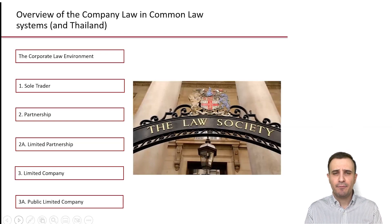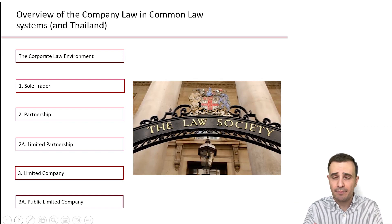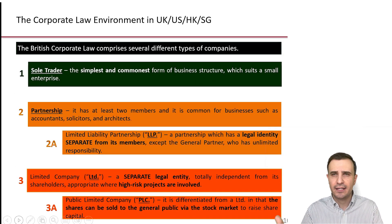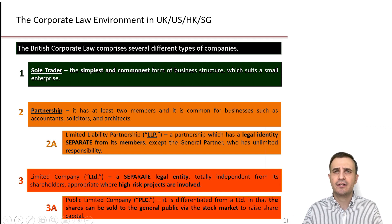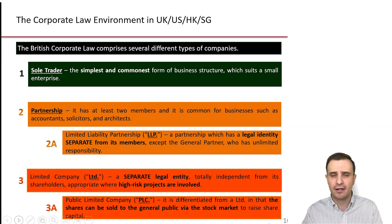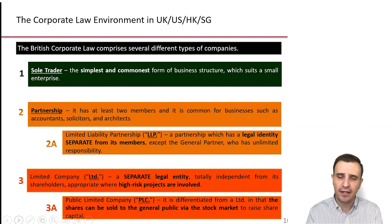Let's get into the details of different types of companies in the common law system, as found in America, UK, Hong Kong, Singapore, and Australia. The first is the sole trader — the simplest and most common form of business structure, generally for very small shops or enterprises. Then we have a partnership, which requires at least two members and is a typical business form for accountants, solicitors, lawyers, and architects delivering professional services.